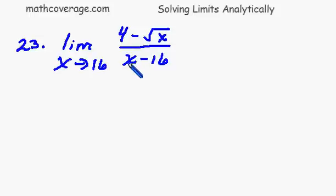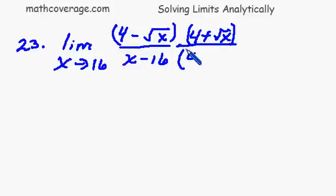We are going to multiply the top by 4 plus the square root of x. Now if you've seen some problems earlier in this problem set, we had to do the same thing. I'm going to write 4 plus the square root of x down here in the bottom also because you see 4 plus the square root of x over 4 plus the square root of x is just 1.